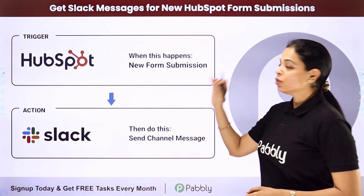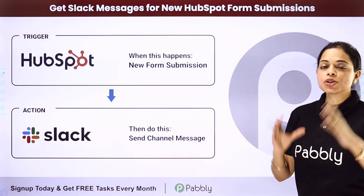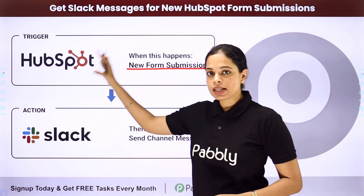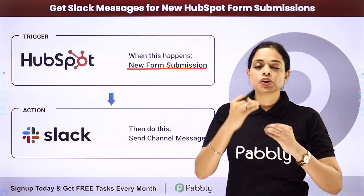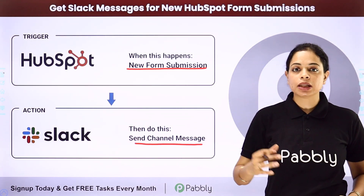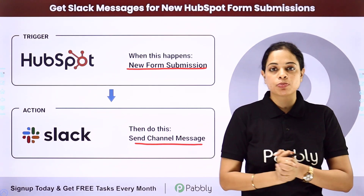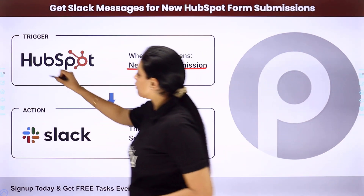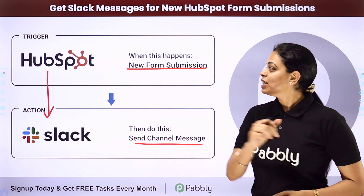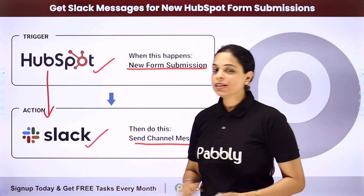In this video, we are going to see how to get Slack messages for new HubSpot form submissions. Our objective is that every time a new form submission happens on HubSpot CRM, automatically a message should be sent on Slack to my team sharing the details of the user that has just been added. Your trigger application will be HubSpot CRM and your action application will be Slack.